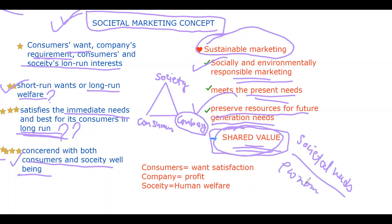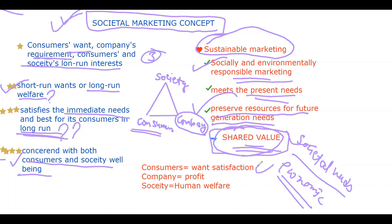From the web diagram you can see that the societal marketing concept has three corners: consumers, which are concerned with wants and satisfaction; the company, which is mainly concerned with profits; and society, which is concerned with human welfare.